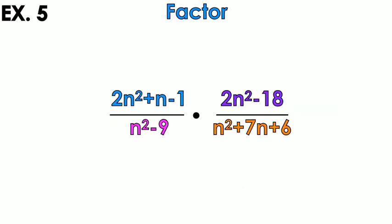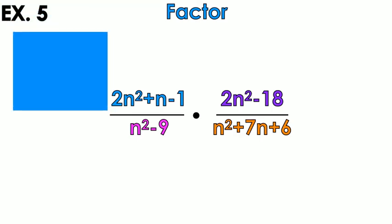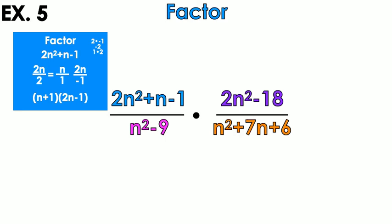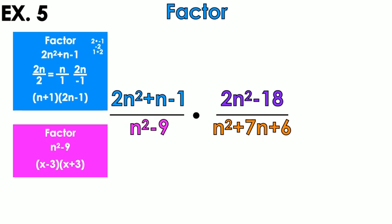Last but not least, example 5 — the hardest problem. I have trinomials and binomials and I have to factor everything. Looking at 2n squared plus n minus 1: I do the side work — multiply a times c, find factors that add to give 1, and simplify. That's the blue part. Then n squared minus 9 is the difference of two squares, factoring to n minus 3 times n plus 3 — that's the pink part.